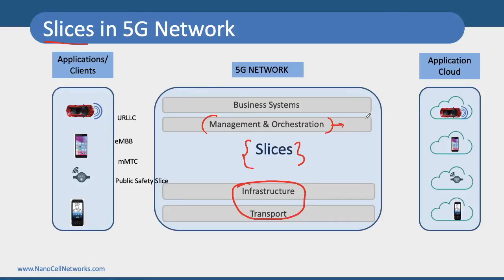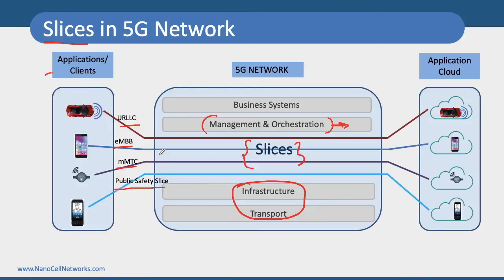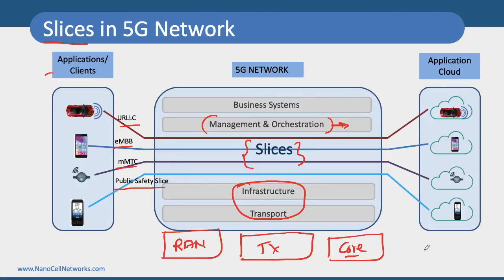To do this, we need a very efficient management and network orchestration. We have applications for URLLC, eMBB, mMTC, and public safety slices. We have a separate dedicated network for each different kind of service, and every different kind of service is carried as a slice. All slices are completely isolated from each other, and they run end-to-end from the radio network to the transport network as well as to the core network, with dedicated resources for one particular slice end-to-end — from the client or user all the way up to the cloud or 5G core network.